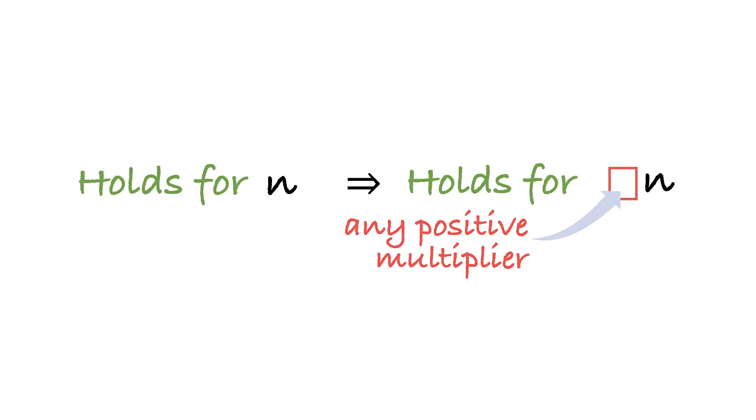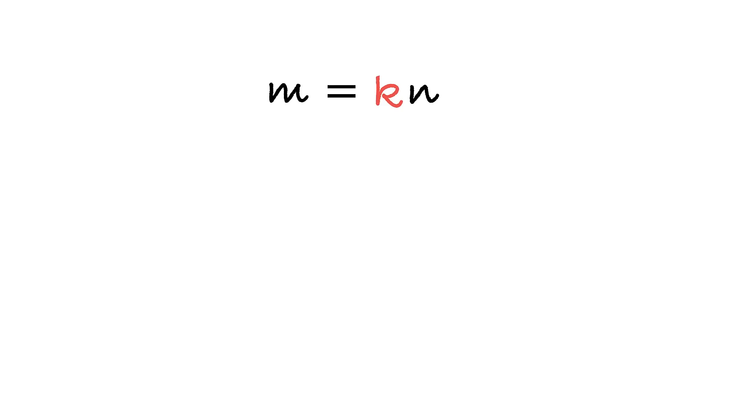Next, if Fermat's Last Theorem is true for a certain exponent n, it's automatically true for all its multiples. How so? Very simple actually. Let's say m is a multiple of n, and let's say that the theorem is true for n. If we assume that it doesn't hold for m, then there are three positive integers x, y, and z such that x^m + y^m = z^m. But m is a product of k and n, and so we can rewrite our equation as follows. And if we denoted x^k as a, y^k as b, and z^k as c, we get a solution to Fermat's equation for n, which contradicts with our initial assumption.